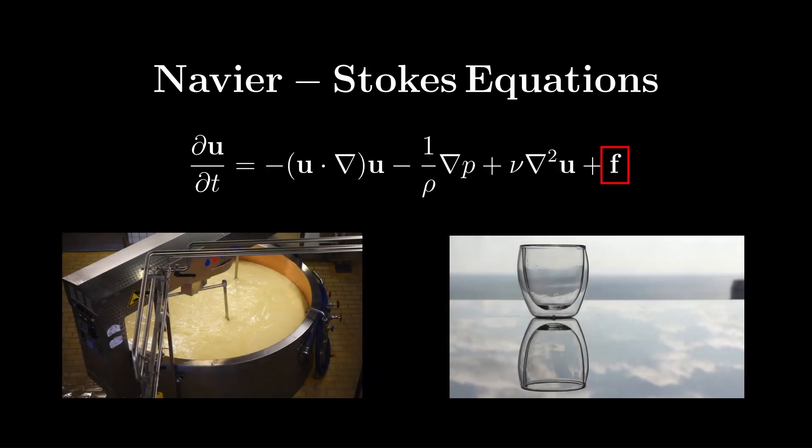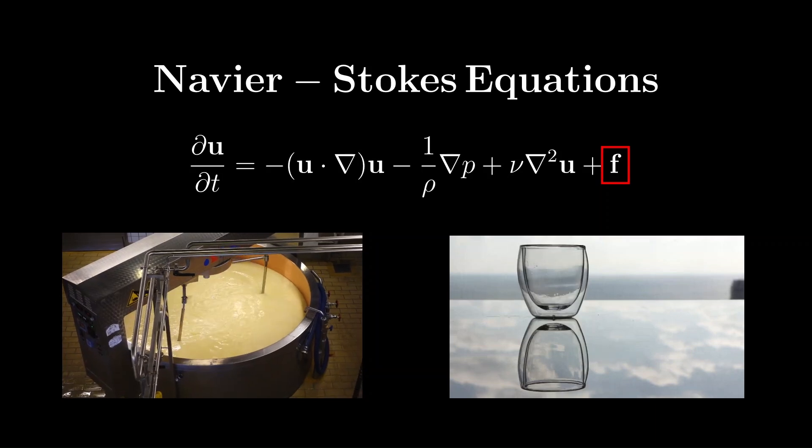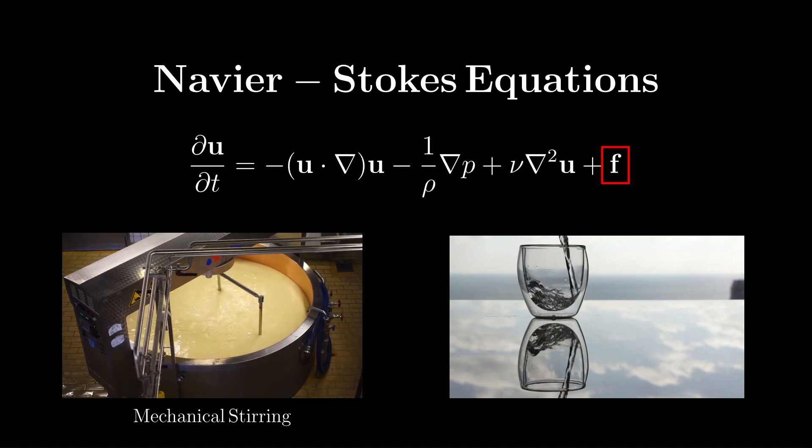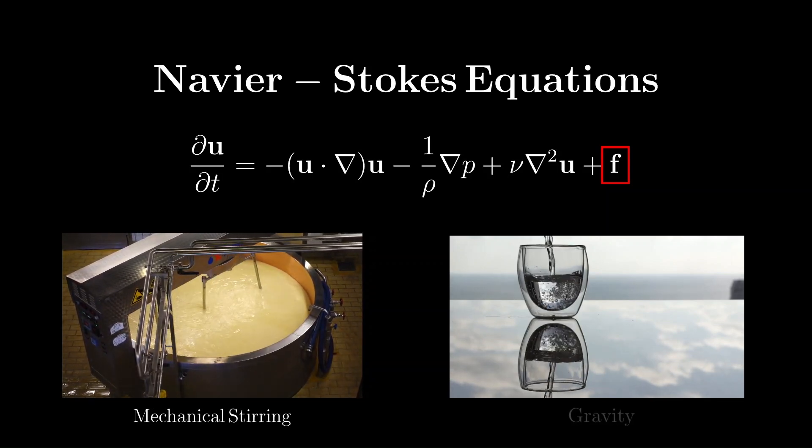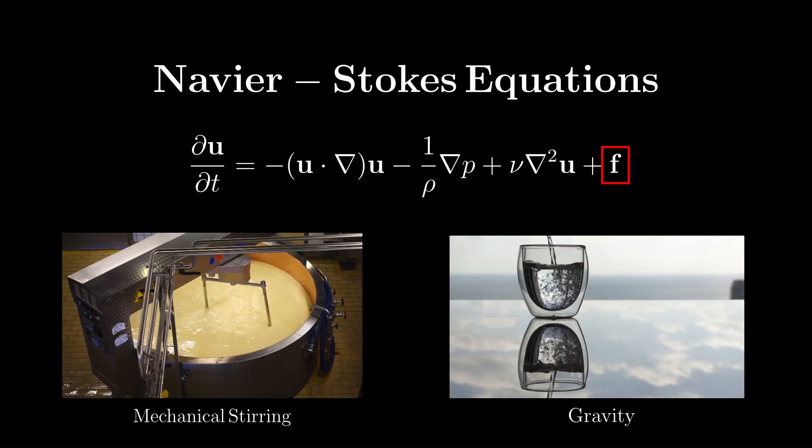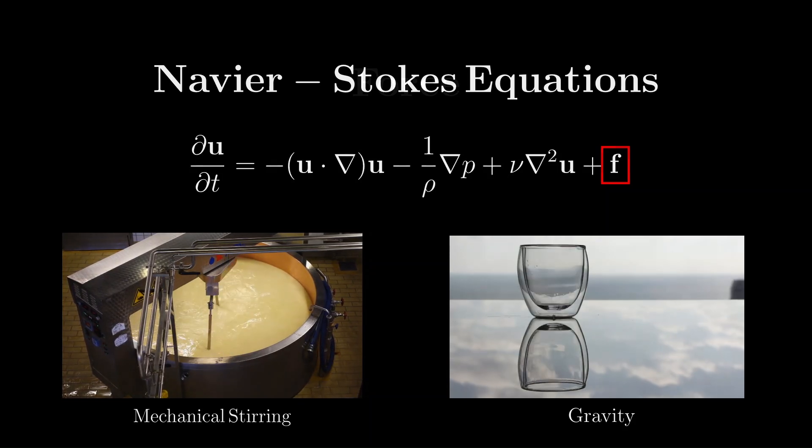The fourth term, f, represents any external forces that act on the fluid. Some examples of this might include forces applied by stirring, which induce motion in the liquid, or the effect of gravity, which drives the flow when the liquid is poured. With the Navier-Stokes equations, we can now begin developing a computational method to simulate our fluids using each of these terms.